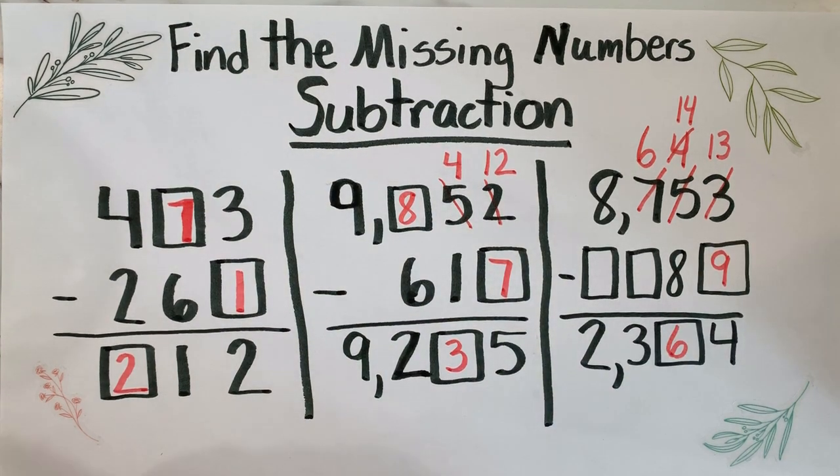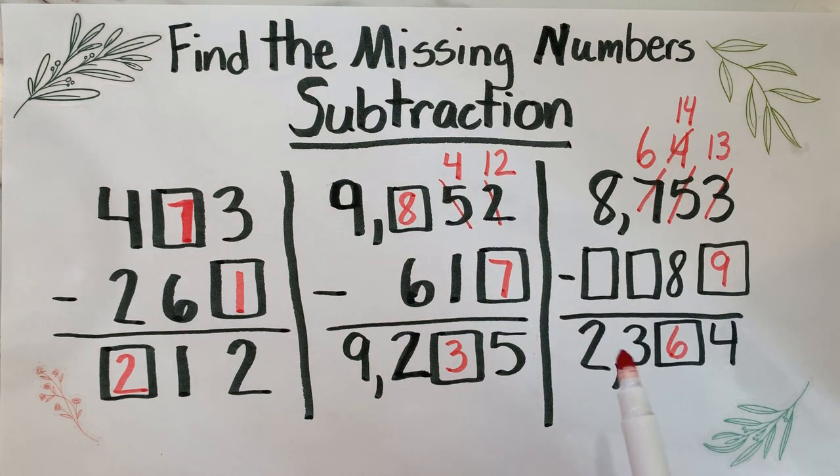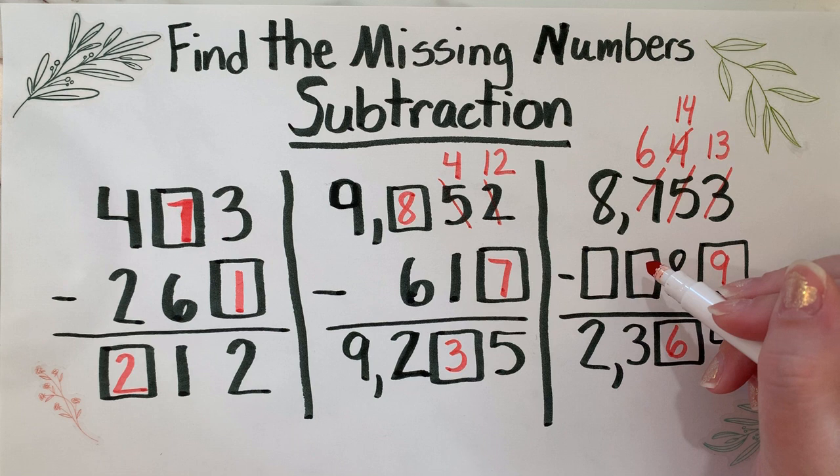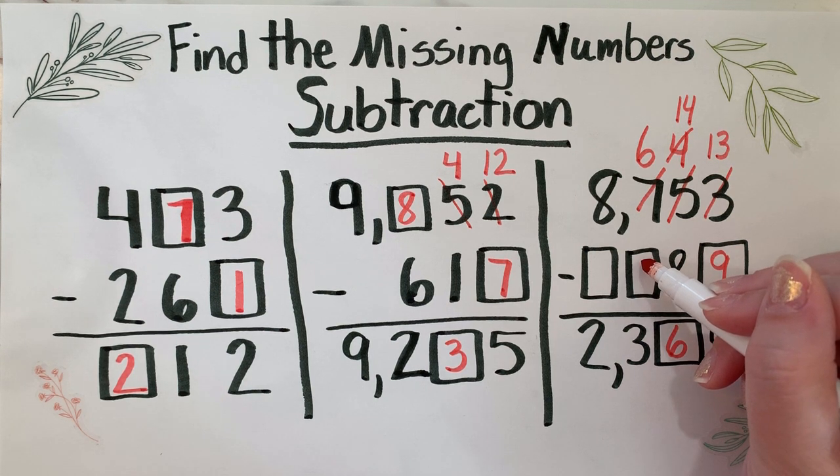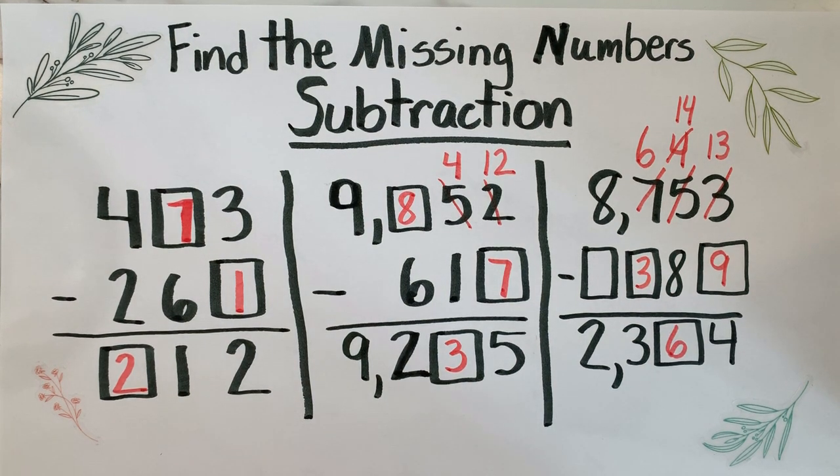Six minus some - now let's, sorry I got excited - let's move on to the next column. So hundreds column: six minus what would give me three? We can start with three and count up - three, four, five, six - so we counted up three times. So six minus three equals three.